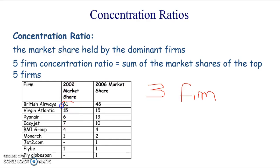So if I look at a three firm concentration ratio from 2002, I'm just adding up these and these add up to 82, I believe. I hope my maths is right.